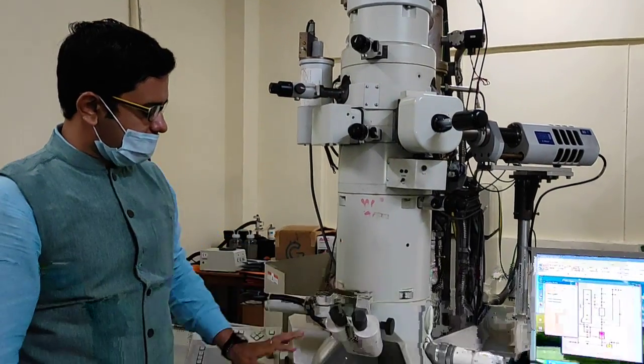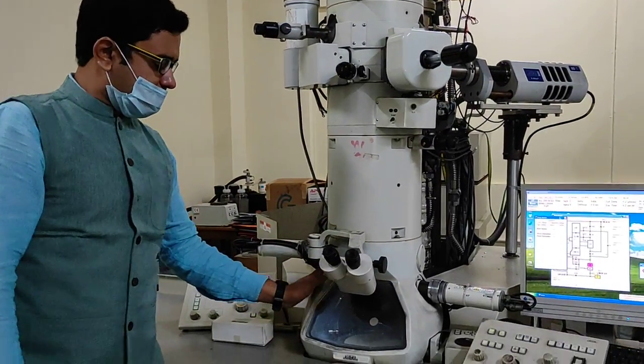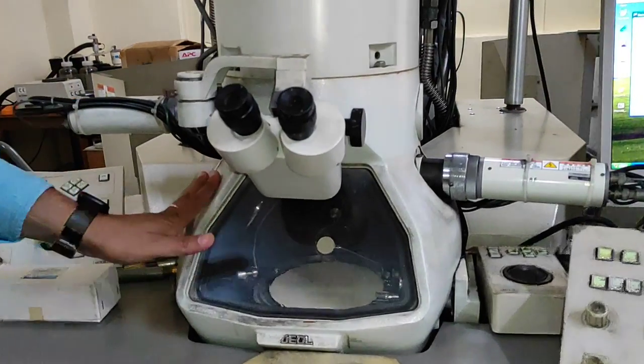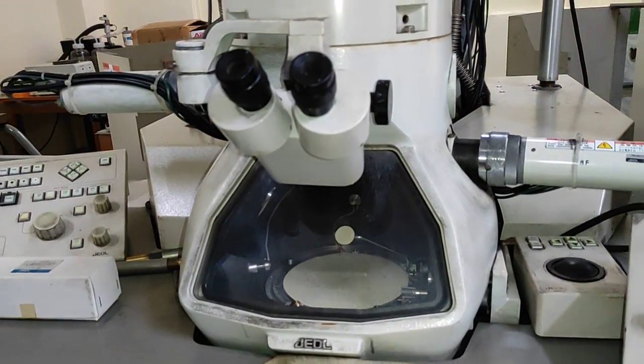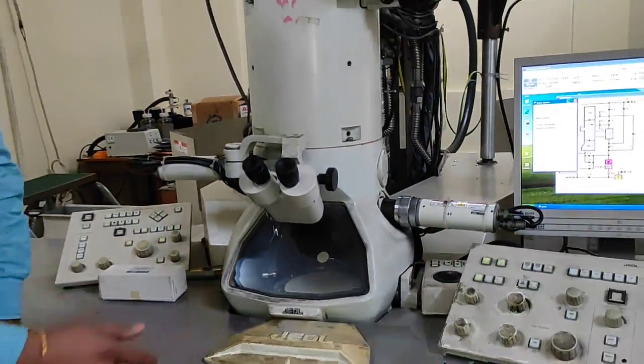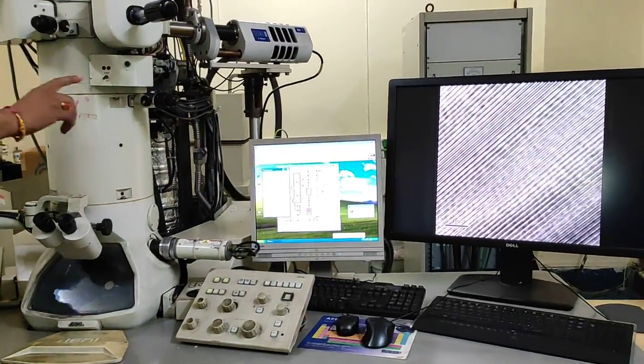This is the lower part of the column and this is the camera chamber where the image of the sample is being formed, which is transferred to the CCD camera situated below. Through the CCD camera we are converting the electronic image to digital.